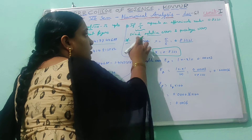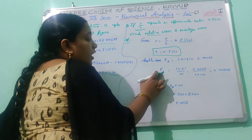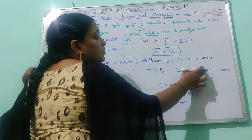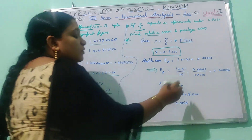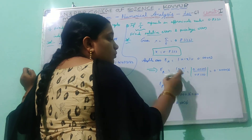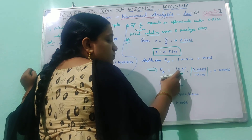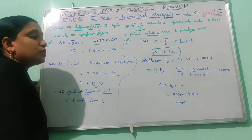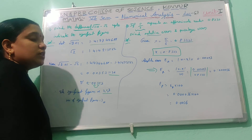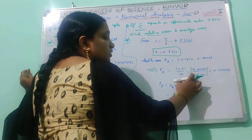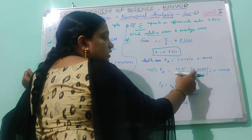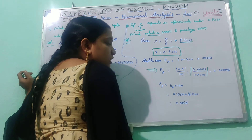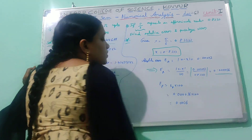Now find the relative error. Relative error means absolute error divided by exact value. Since we may get a negative value, we apply modulus. So relative error = |x − x̄| / |x| = |0.000003| / 0.83333, which equals 0.0000036. Relative error is 0.0000036.